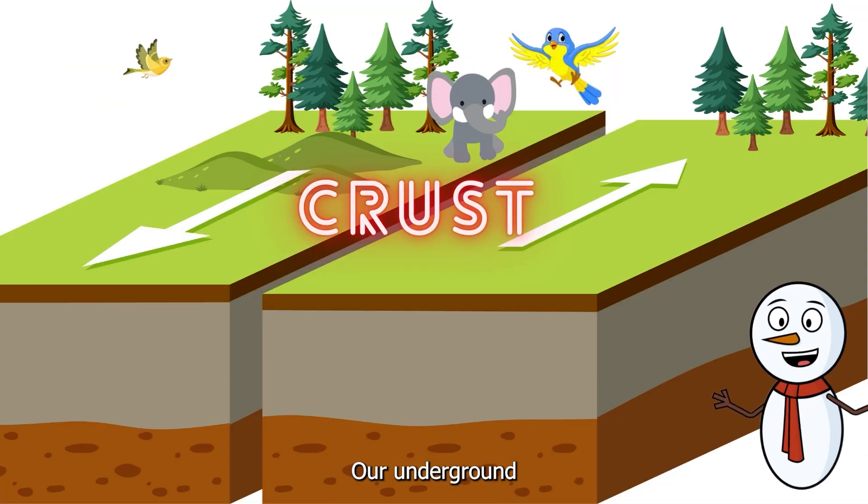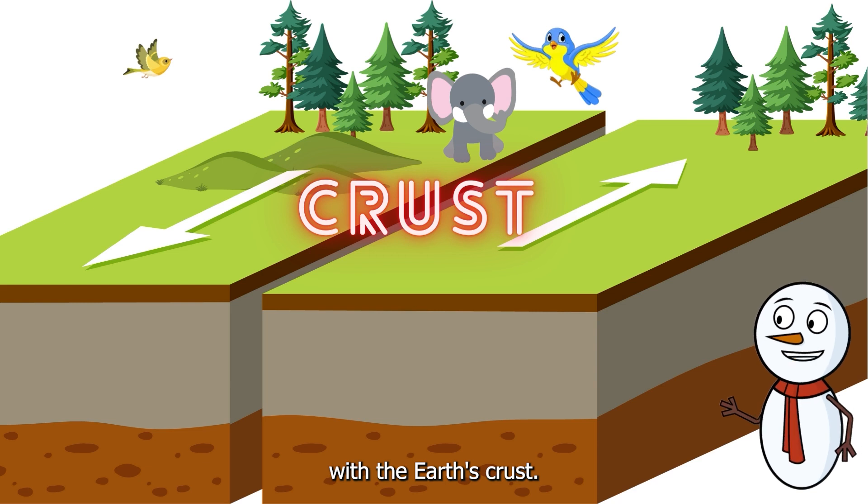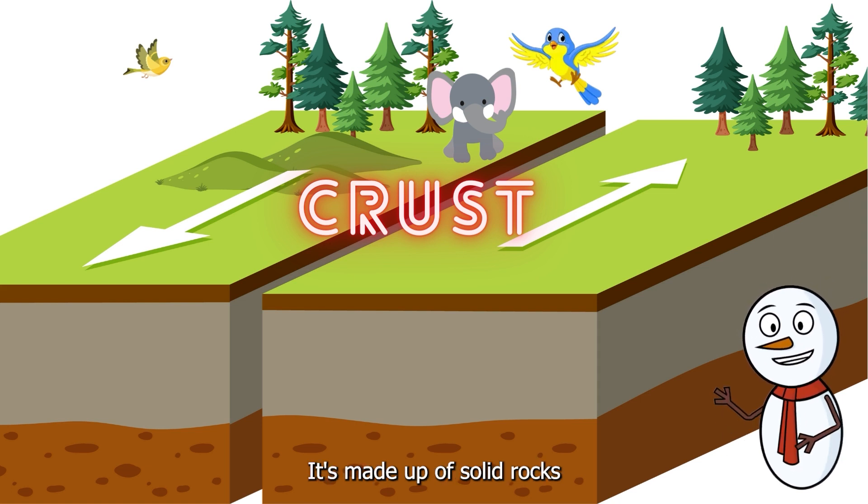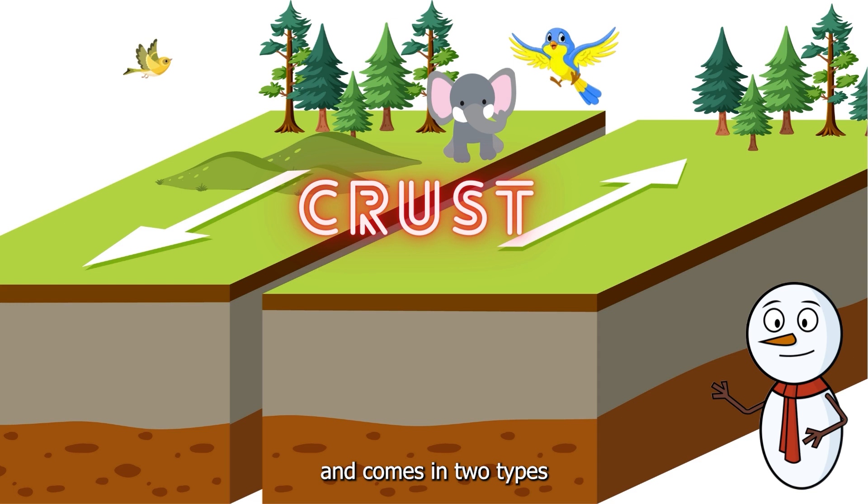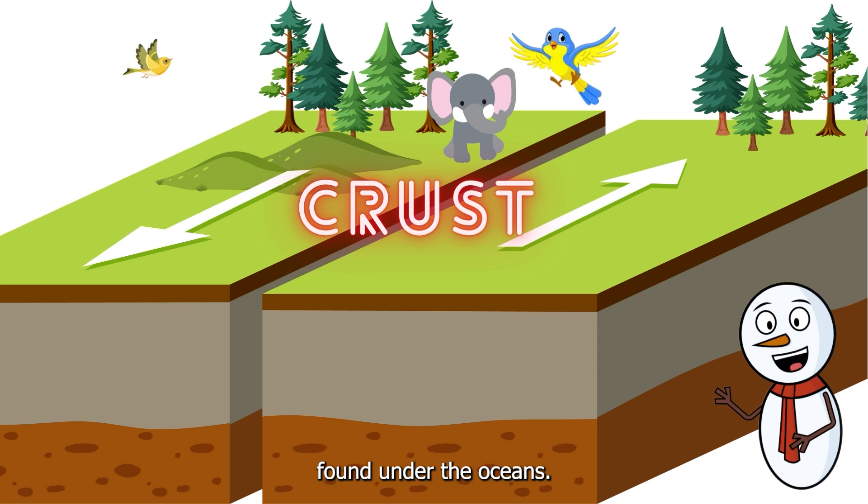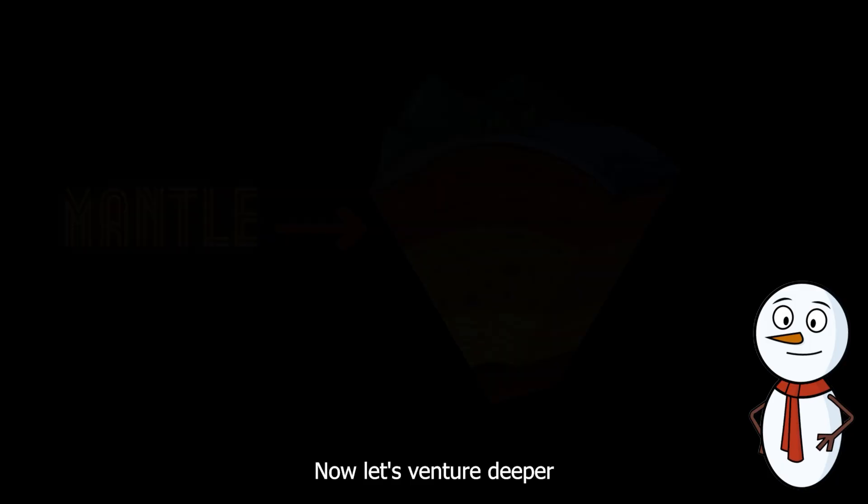Our underground exploration begins with the Earth's crust. The crust is like Earth's outer skin, and it's where we live. It's made up of solid rocks and comes in two types: the continental crust, found under continents, and the oceanic crust, found under the oceans.